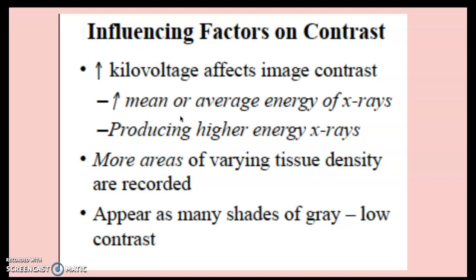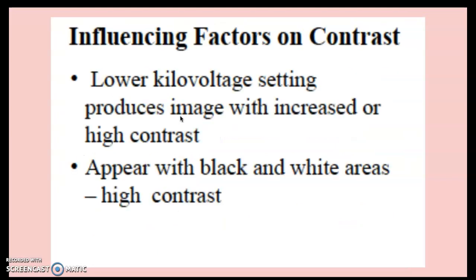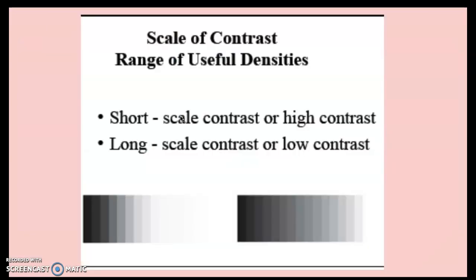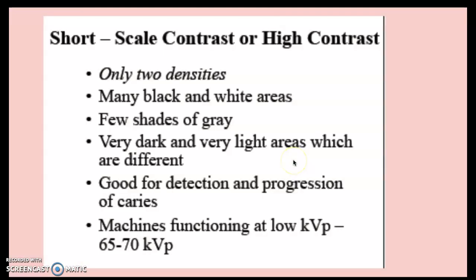Higher kilovoltage produces images that appear as many shades of gray, which is low contrast. Lower kilovoltage settings produce high contrast — more black and white areas. There is a short scale and a long scale of contrast. The short scale has high contrast; the long scale shows low contrast. The short scale has only a few densities — many black and white areas, very few shades of gray. It's good for detection of caries and the machine functions at low kVp, 65 to 70.